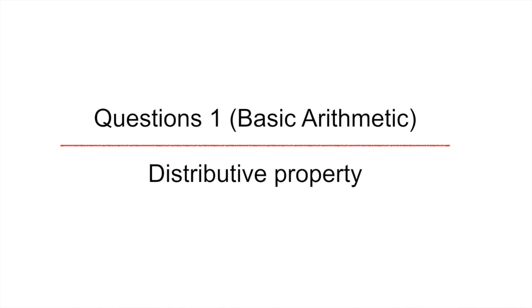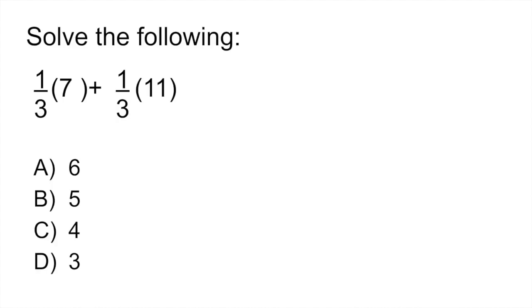Question 1 is a basic arithmetic question that looks at the distributive property and it says solve the following: 1 third multiplied by 7 plus 1 third multiplied by 11. Most of us would look at this and kind of groan because what's 1 third of 7? Kind of a little bit challenging to do in your head.